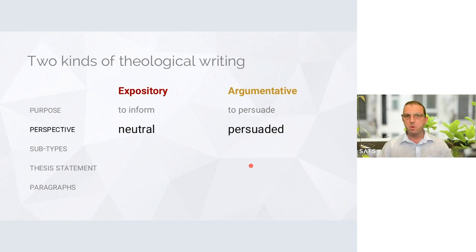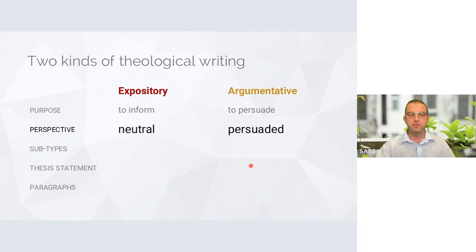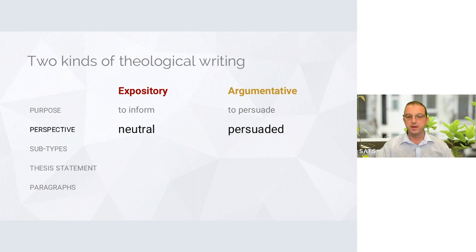Your perspective when you write in these two different ways is quite different. When you write an expository piece, you're not particularly dealing with a controversial topic, so you try to take an objective, neutral, dispassionate stance. By contrast, when you write an argumentative piece, you typically write from the perspective of one who is persuaded and is trying to persuade others that a particular position is the best one. You make no pretense of being neutral — you've concluded that one argument is correct and you're trying to persuade your reader.